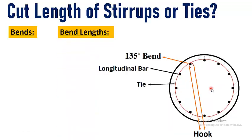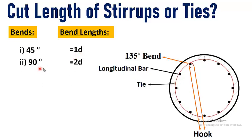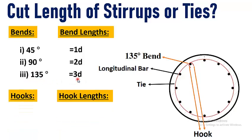There are different types of bends used to achieve the desired shape of a tie or stirrup, and these bend lengths are to be deducted. A 45-degree bend length equals 1 times the diameter of the bar; a 90-degree bend length equals 2 times the diameter; and a 135-degree bend length equals 3 times the diameter of the stirrup or tie bar. For circular ties we also have hook lengths to consider.